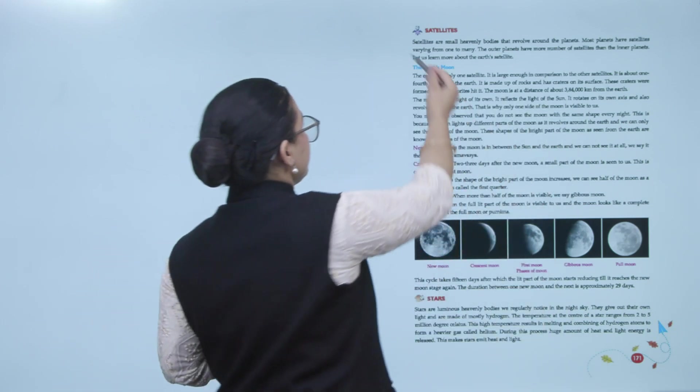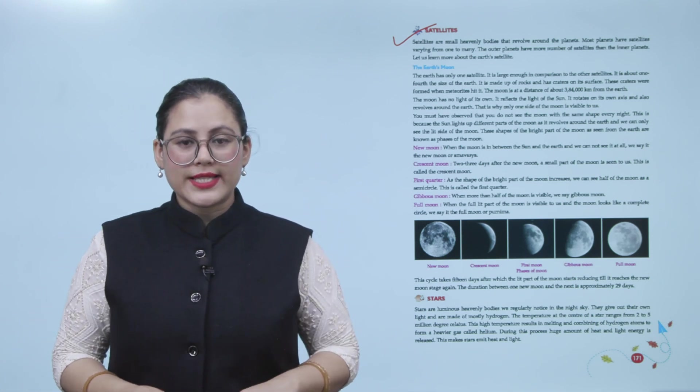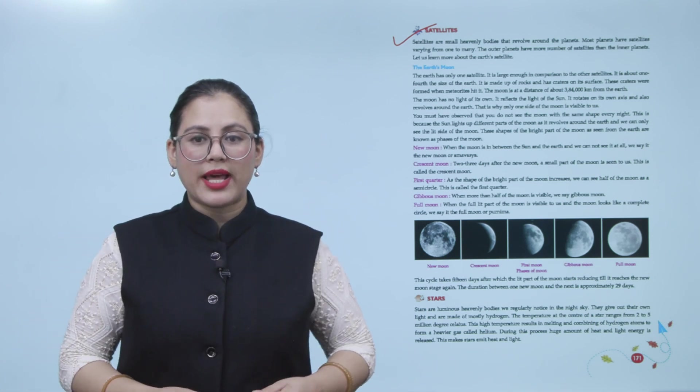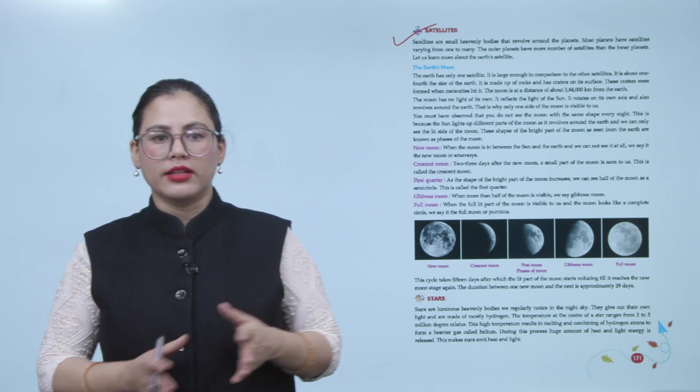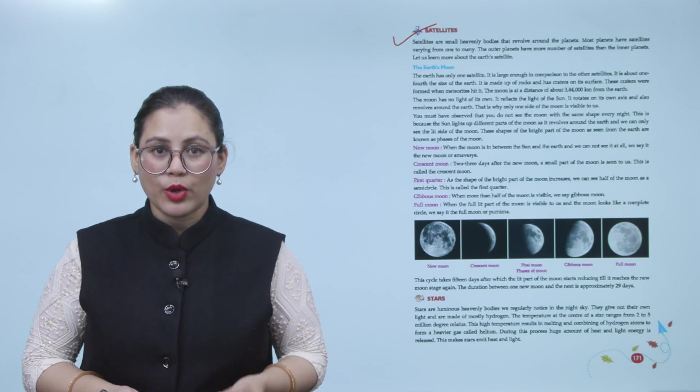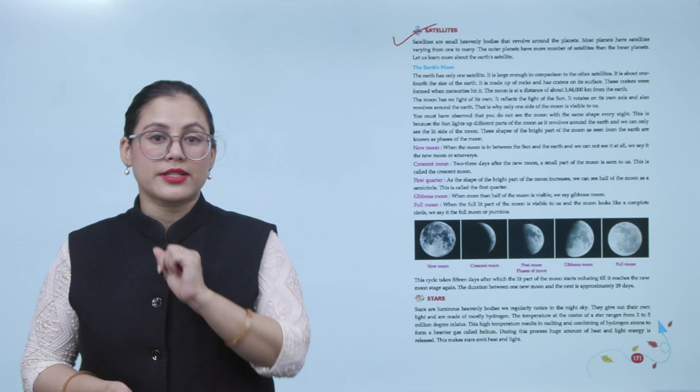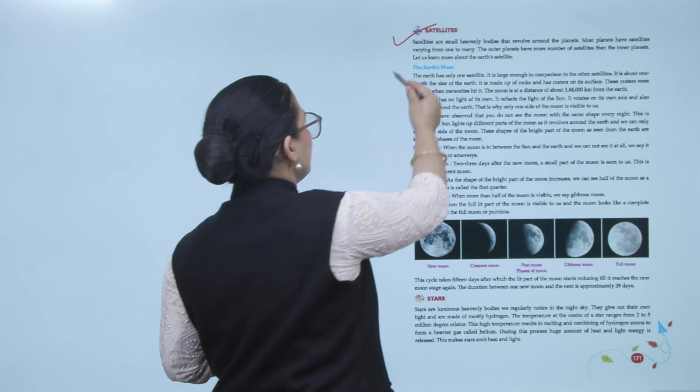Satellites. Satellites are small heavenly bodies that revolve around the planets. Most planets have satellites varying from one to many. The outer planets have more number of satellites than the inner planets. Let us learn more about the earth's satellite.